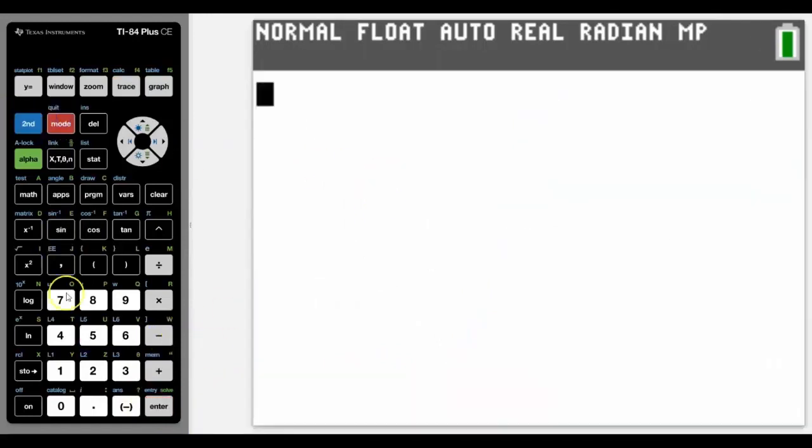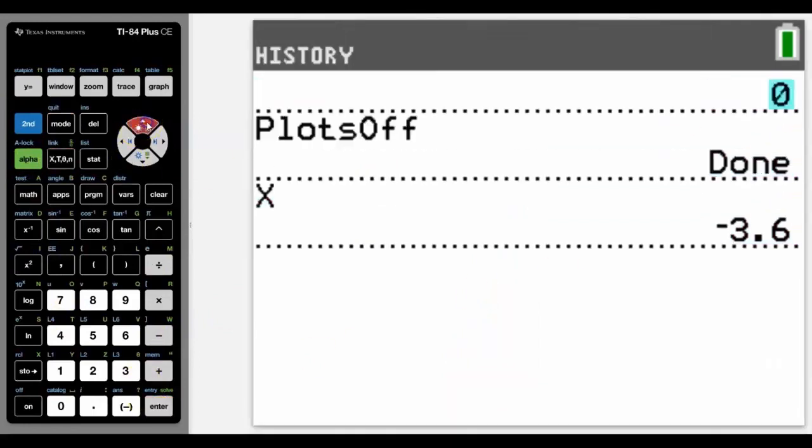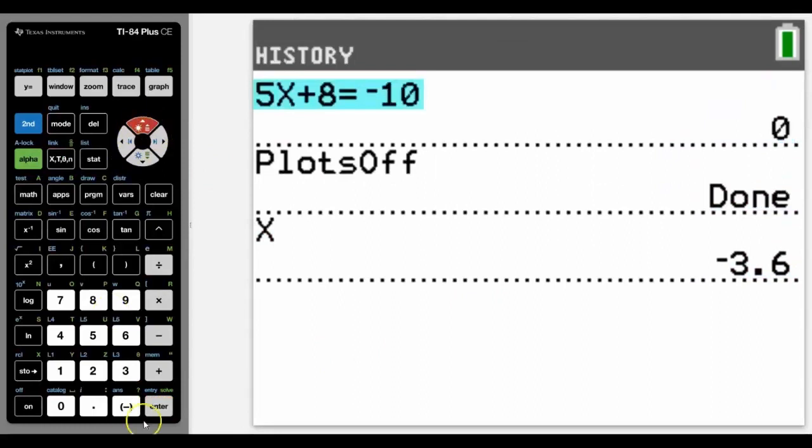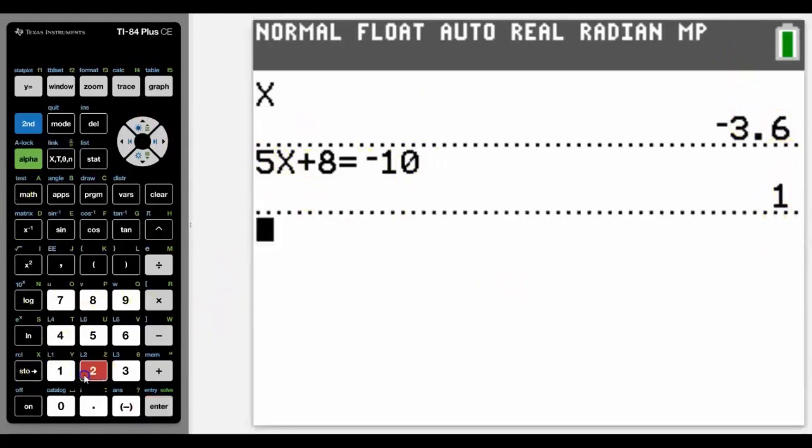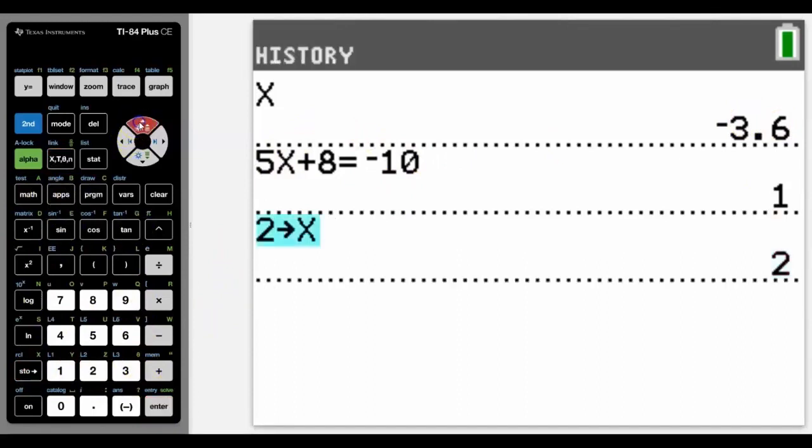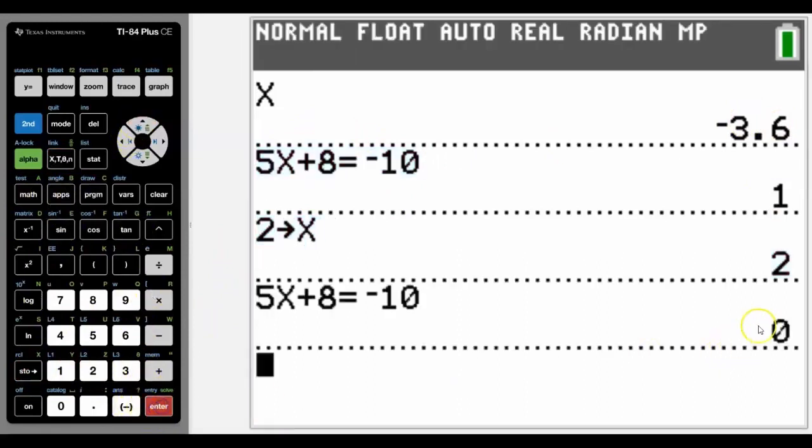Notice that the calculator now stores that value as negative 3.6. And if I go up and copy that equation again it will now give me the answer of one, which means it's true. That when x is negative 3.6, it's true. When I had a number before, I actually had x stored as two. If I go up and copy that it will say that it is false. It will give me a zero. So basically working binary.